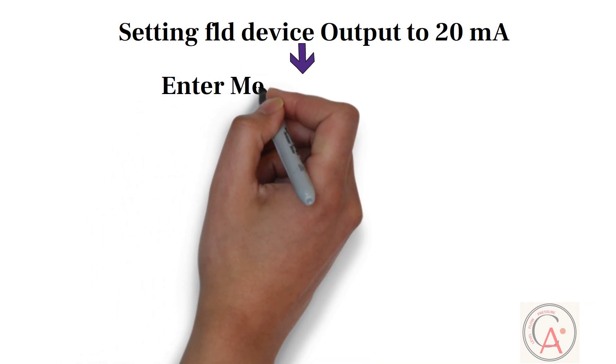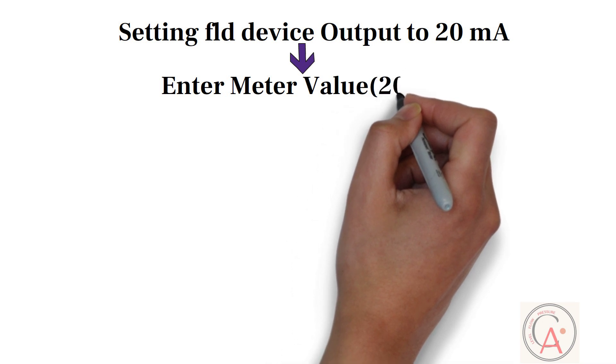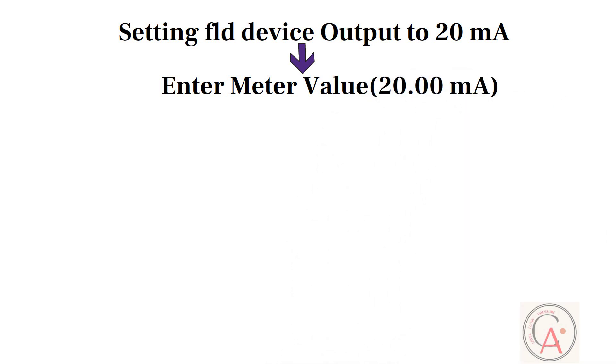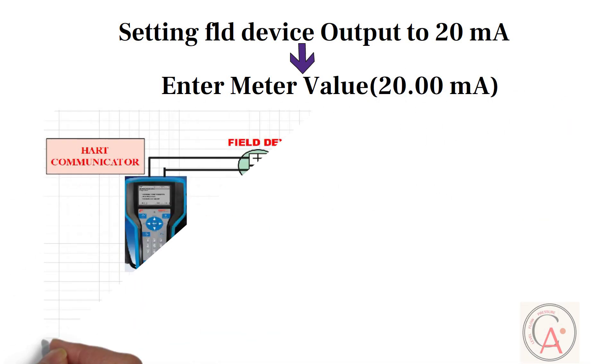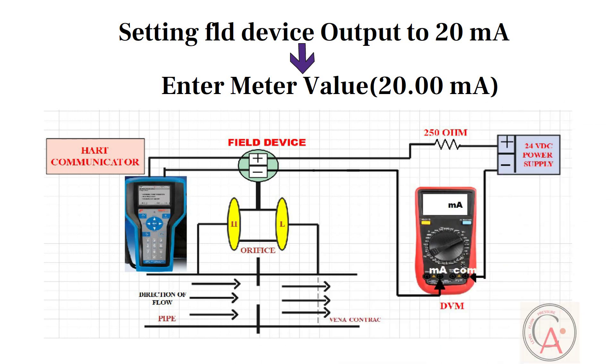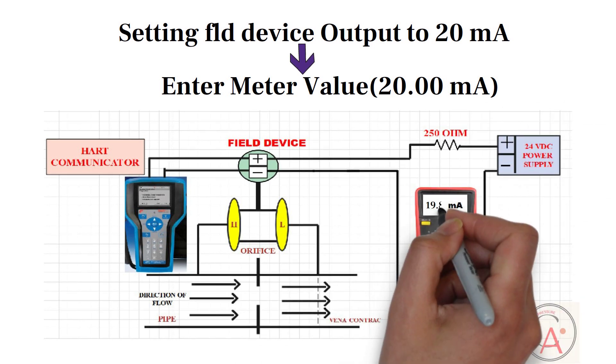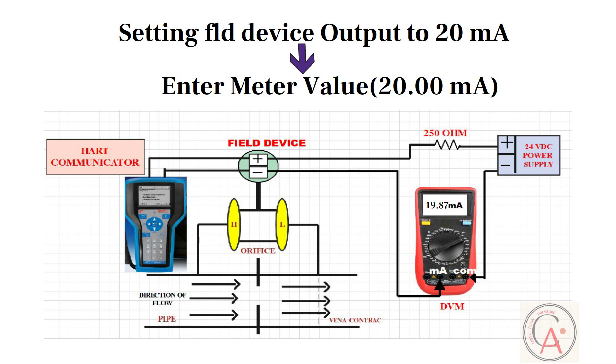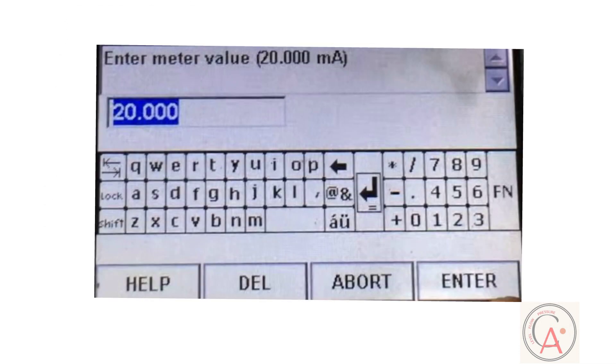After this, ENTER milliampere option will display on the screen. At this time, enter the milliampere value of ampere meter into HART communicator. For example, if ampere meter reads 19.87 milliampere, then enter 19.87 milliampere into HART communicator and press ENTER button.